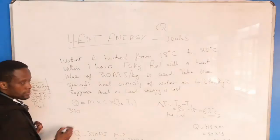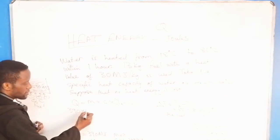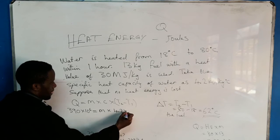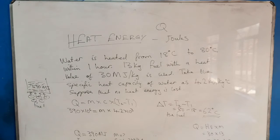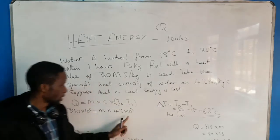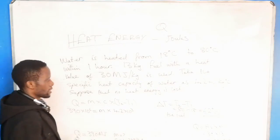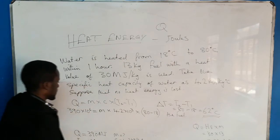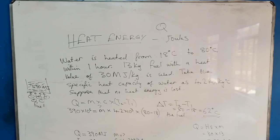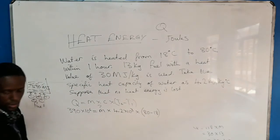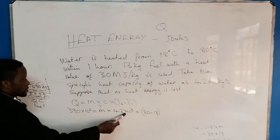We have our 390 times 10 to the power 6, as the energy that the water receives, equal to the mass times the specific heat capacity — it is kilojoules, so we multiply by 10 to the power 3 — then multiplied by T2 minus T1. We are solving for M. We already know T2 minus T1 is 62, so this is 62 times the specific heat capacity.